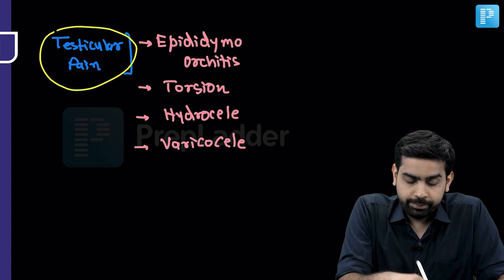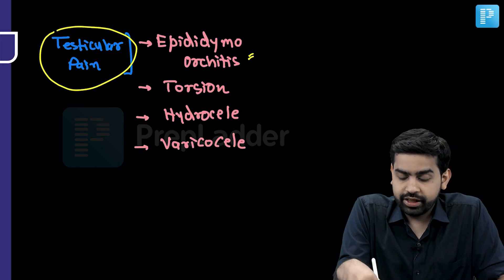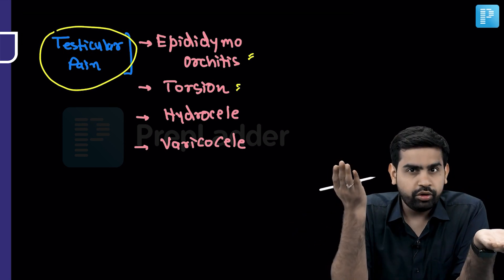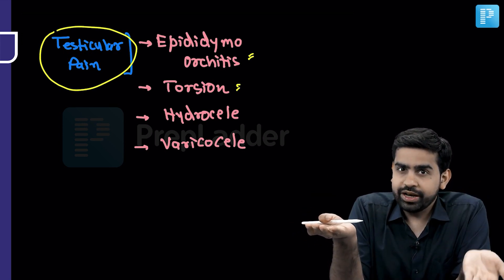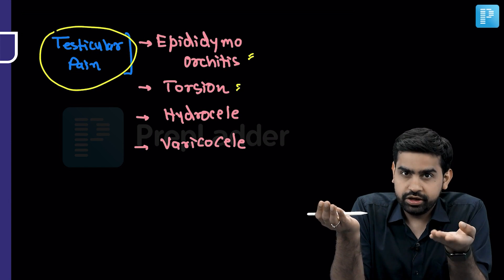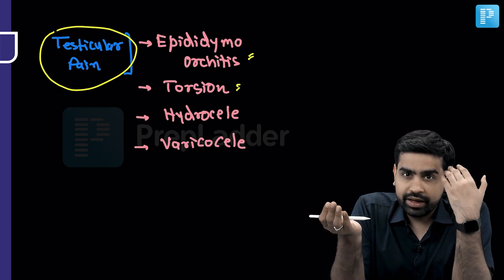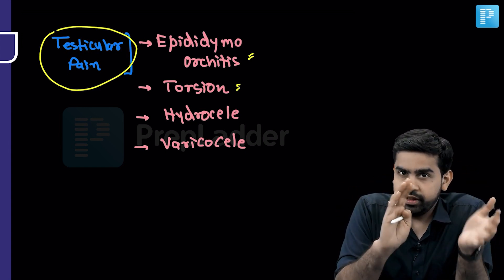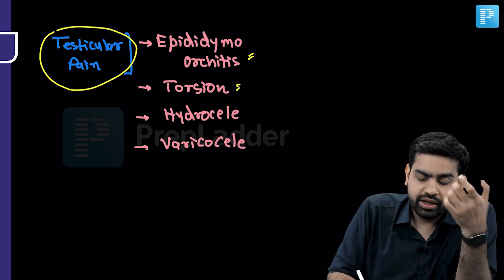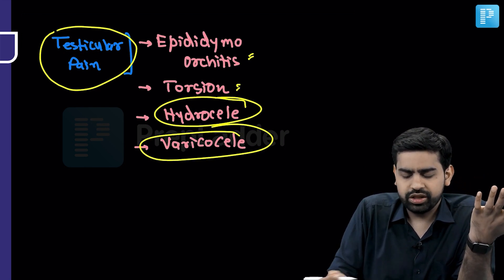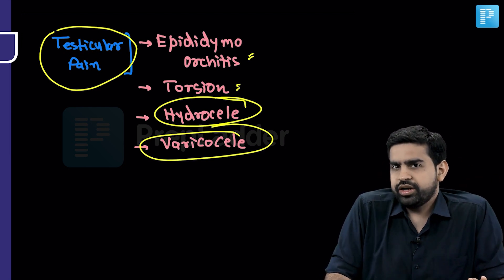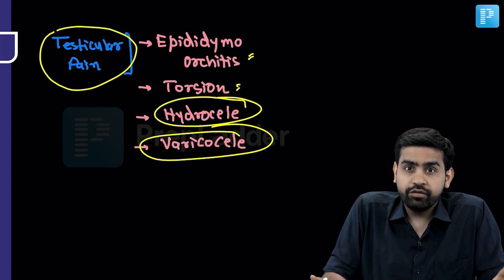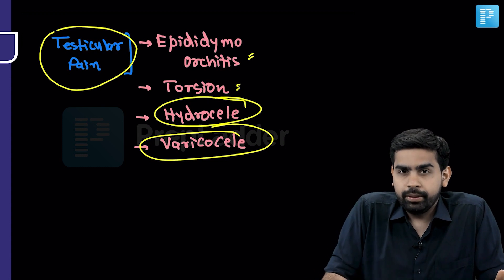Regarding testicular pain — epididymal orchitis and torsion can both cause it. The Prehn's sign helps distinguish between them: you lift the testes, and if the pain reduces, the answer is epididymal orchitis; if the pain increases, it is testicular torsion. Pain can also occur in hydrocele and varicocele. Torsion of the hydatid of Morgagni is another condition where the testes may be painful.